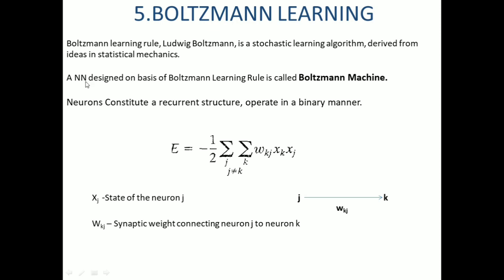A neural network designed on the basis of Boltzmann learning rule is called a Boltzmann machine. Boltzmann learning is stochastic, which is a non-deterministic learning algorithm.